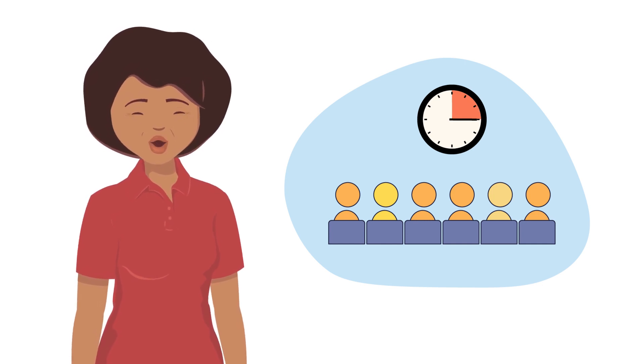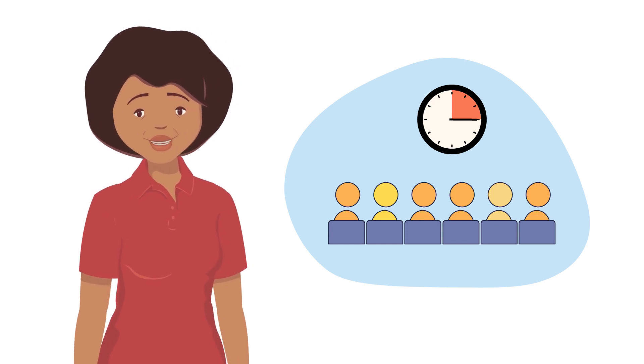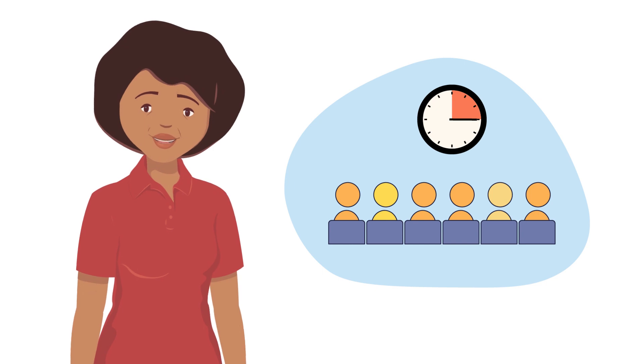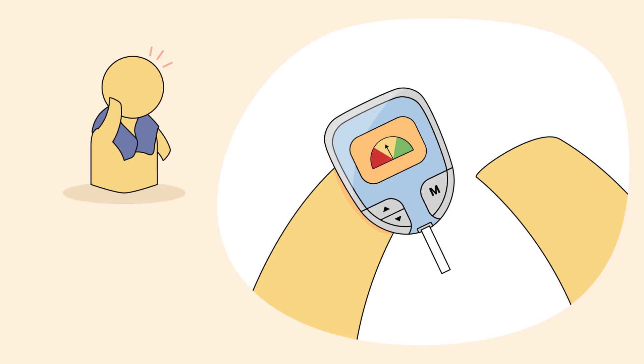Finally, some adverse events have nothing at all to do with the vaccine or the experience. Rather, they happen around the same time but have a different cause entirely. An example may be an individual experiencing a complication from another chronic disease such as diabetes.